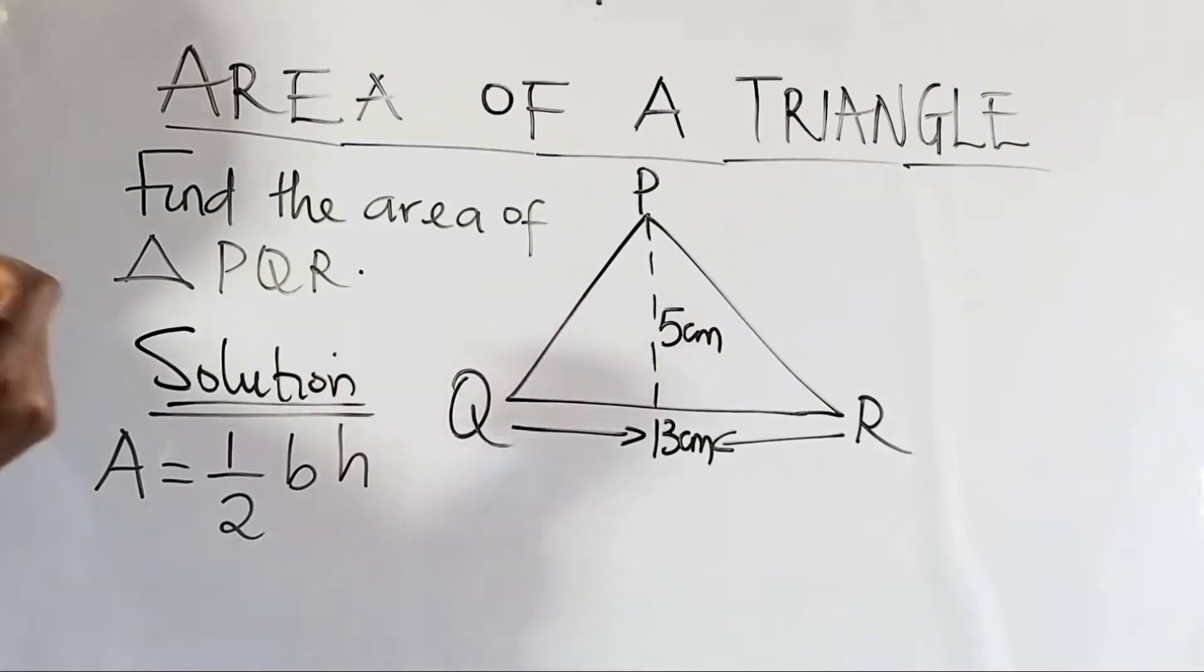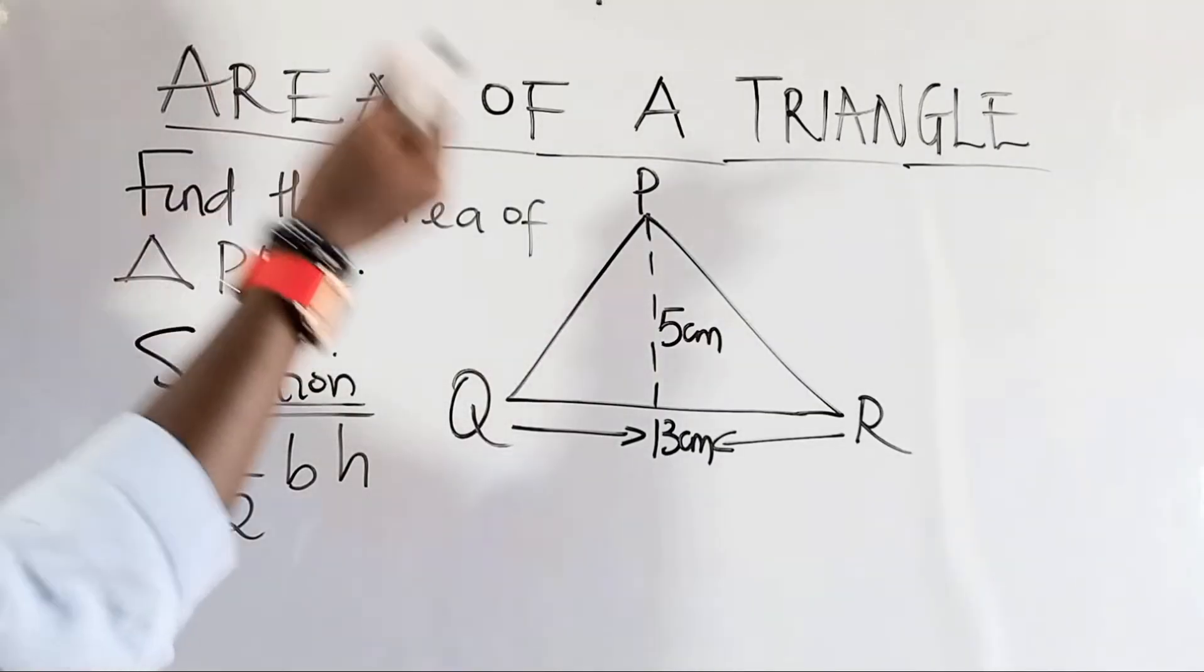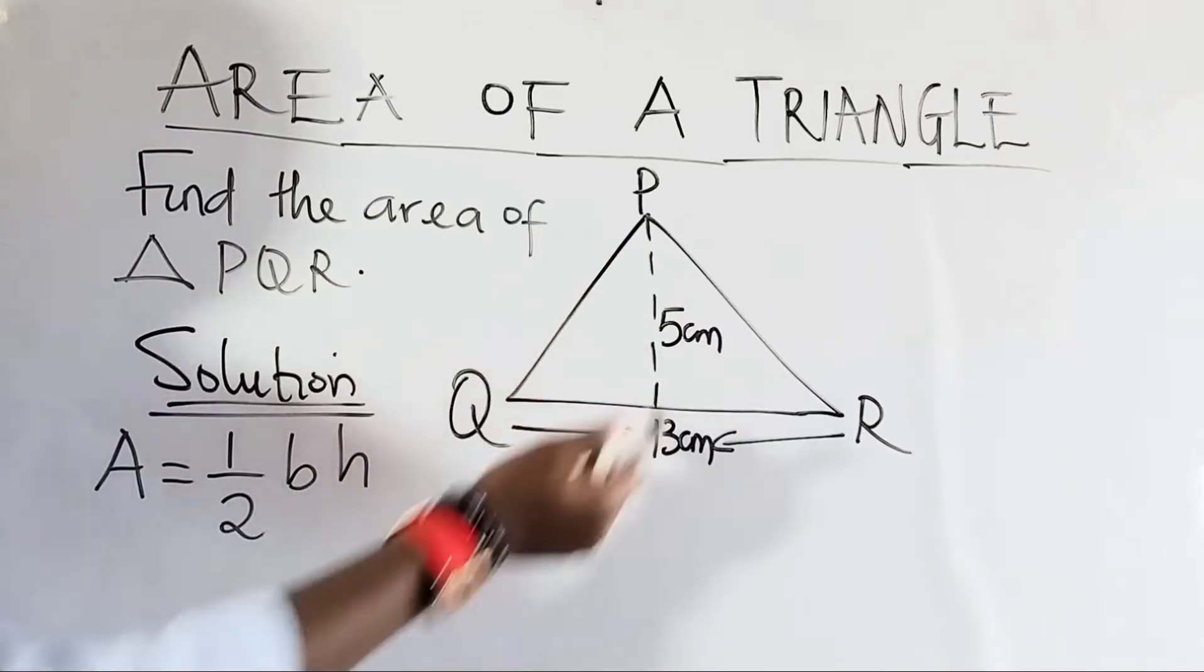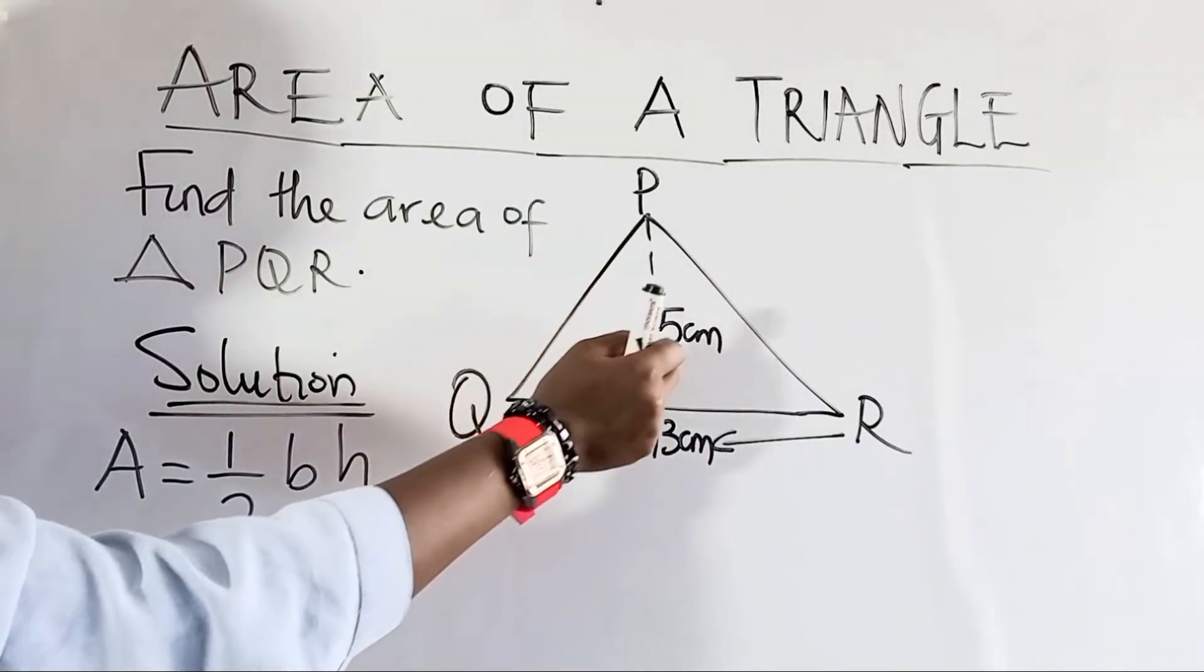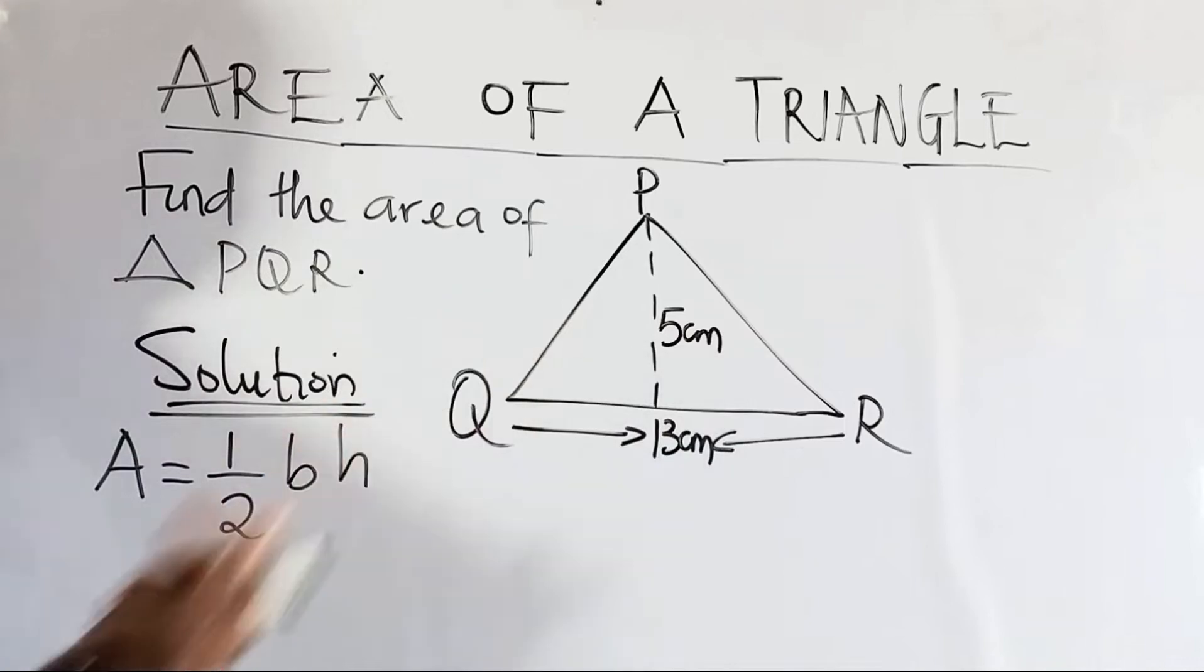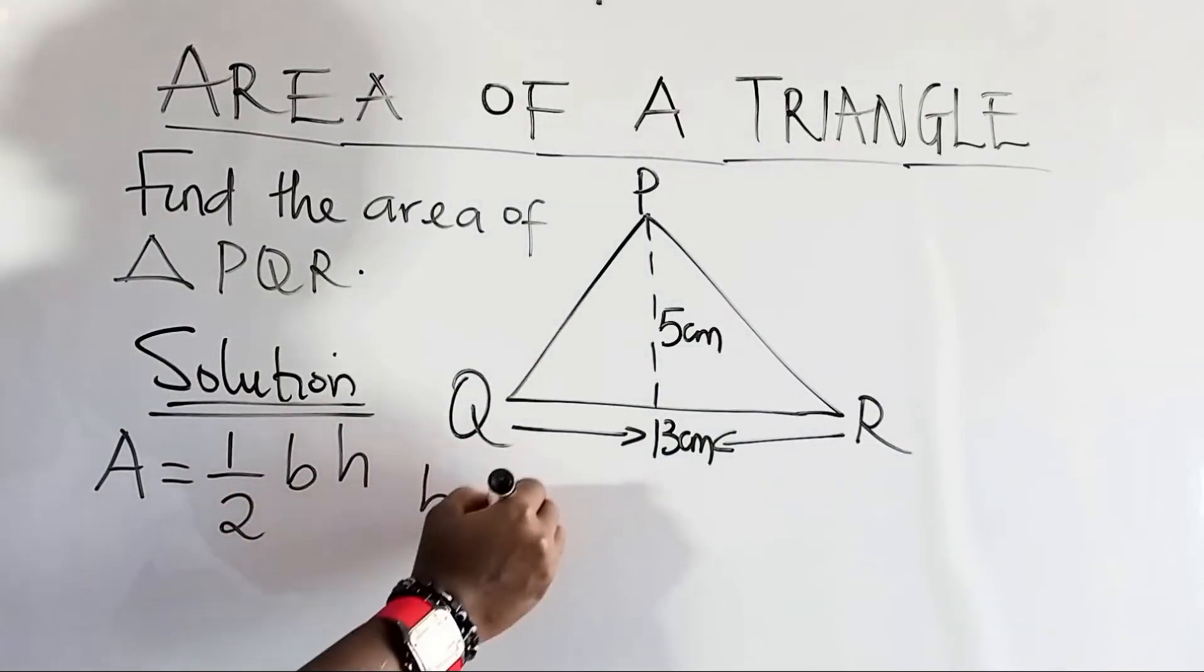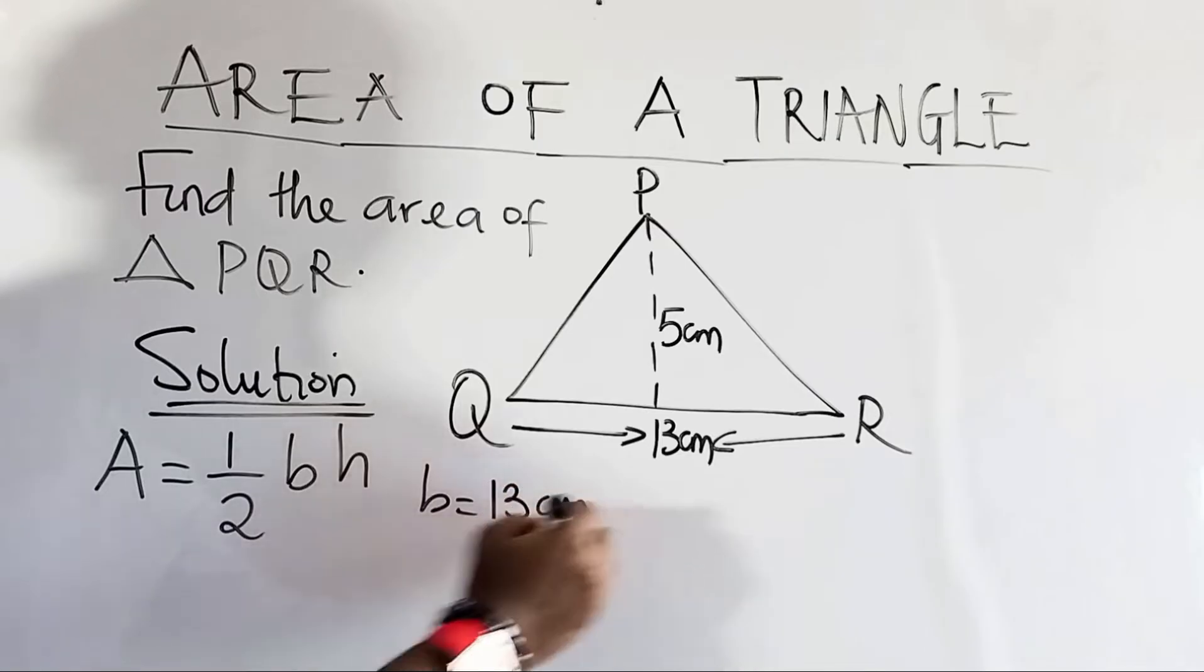What about the height? The height of the triangle must always be perpendicular to the base. So here now, our height is five centimeters. So we have our base to be 13 and we have the height to be five.